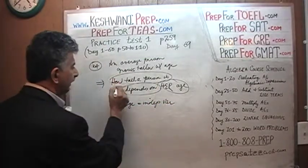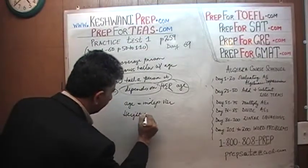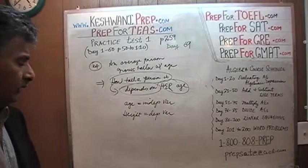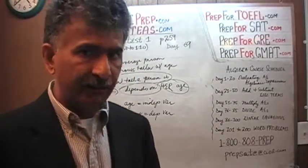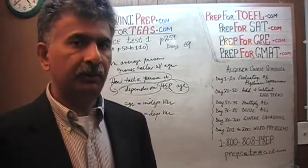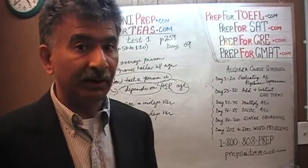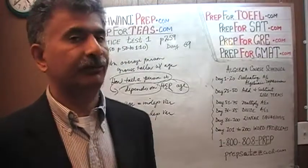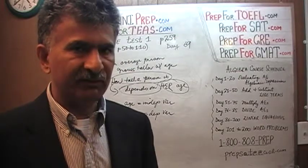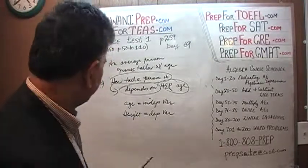Because the height — the height depends on age. Height is the dependent variable. What does height depend on? How old the person is. The older the person, the taller he or she is, typically. You have to be careful about it. It's okay for us to use informal language in daily conversation, but not on this exam — they will mark it as wrong. Let's do the next one, shall we? Number 25.